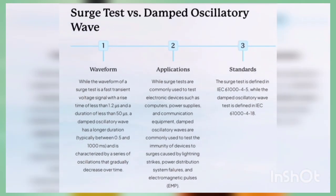Now let's understand the differences between surge test and damped oscillatory wave. First, waveform: the waveform of a surge test is a fast transient voltage signal with a rise time of less than 1.2 microseconds and a duration of less than 50 microseconds, while a damped oscillatory wave has a longer duration typically between 0.5 to 1000 milliseconds and is characterized by a series of oscillations that gradually decrease over time. For application: surge tests are commonly used for computers, power supplies and communication equipment, while damped oscillatory waves test immunity to surges from lightning strikes, power distribution system failures, and electromagnetic pulses. The standard is also a main difference — surge test is defined in IEC 61004-5 while damped oscillatory wave is defined in IEC 61004-18.